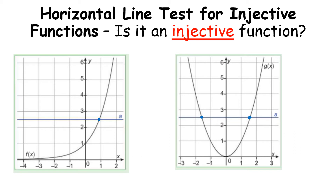The horizontal line test means that anywhere you draw the line it touches the graph at most once. It's not about finding one position where it works — you have to be able to draw a line anywhere and it will touch the graph at most once. That is the definition of the horizontal line test for injectivity.